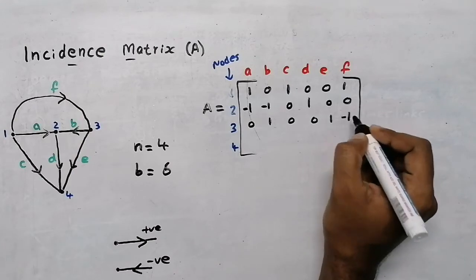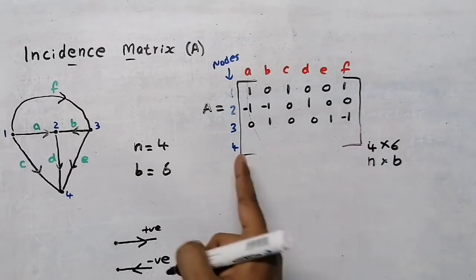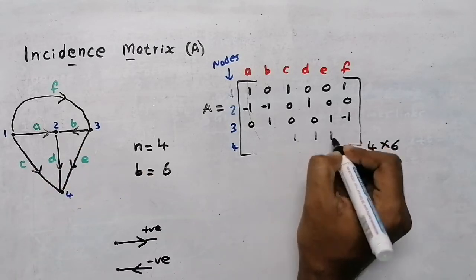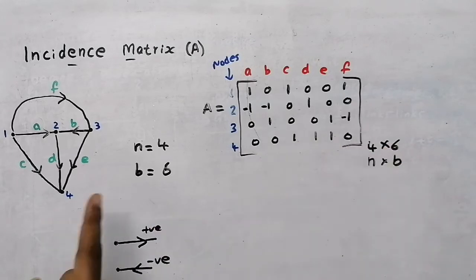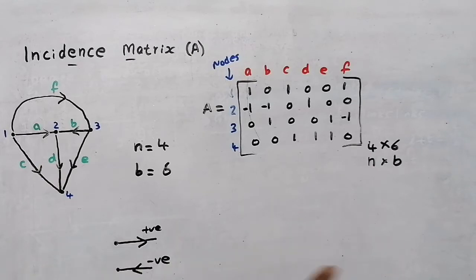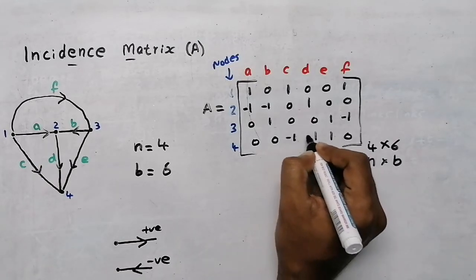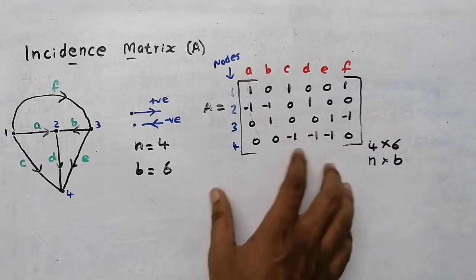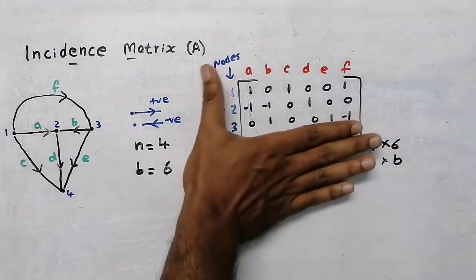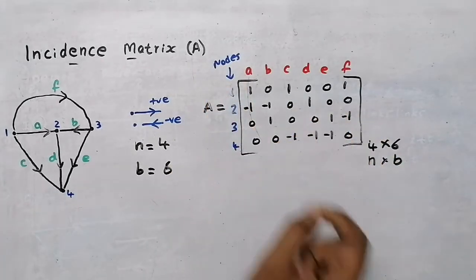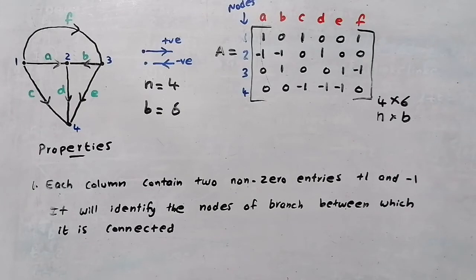For node 4, branches c, d, and e are connected, so put 1 near those and 0 for the remaining. All branches are coming into node 4, so all entries are negative (−1). This completes our incidence matrix. If we remove any one row from the incidence matrix, it is called the reduced incidence matrix.